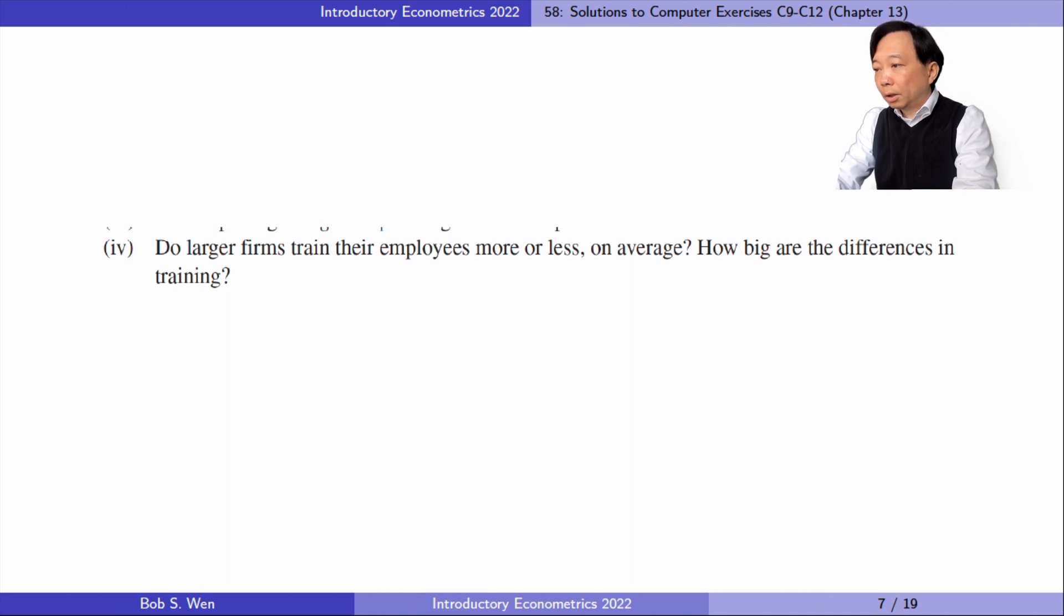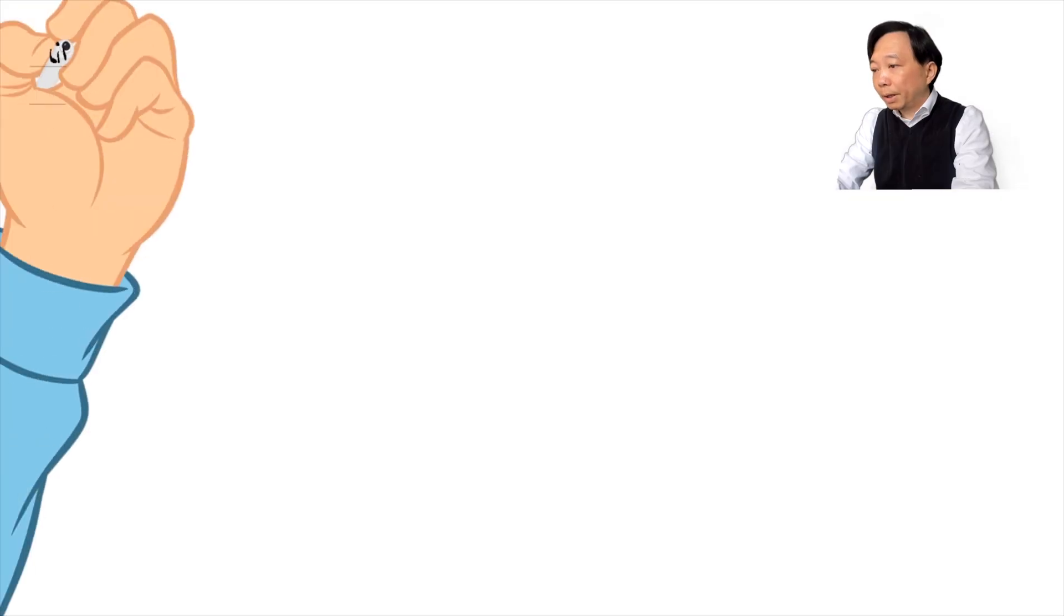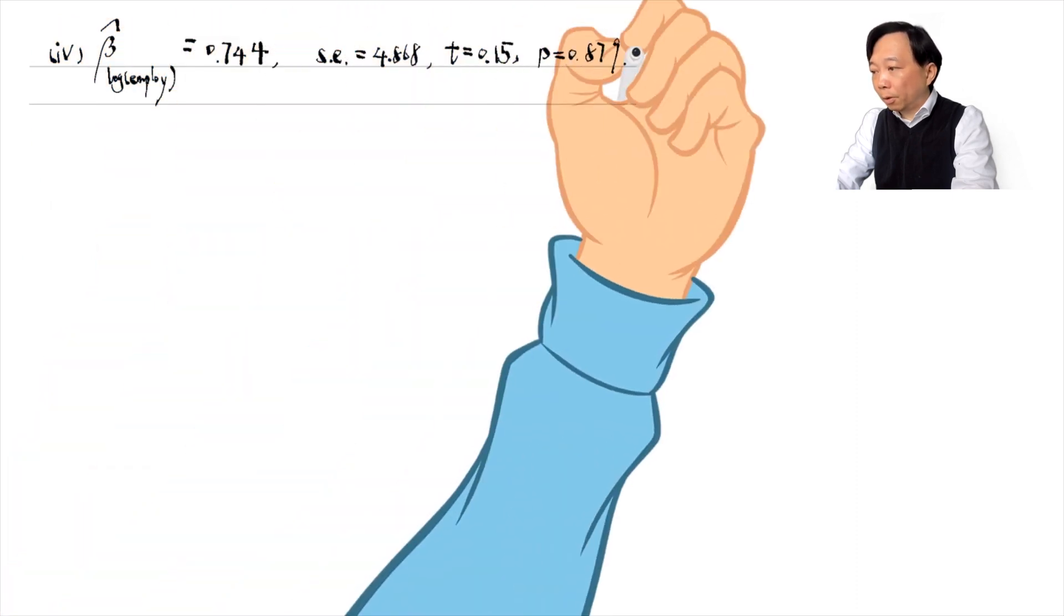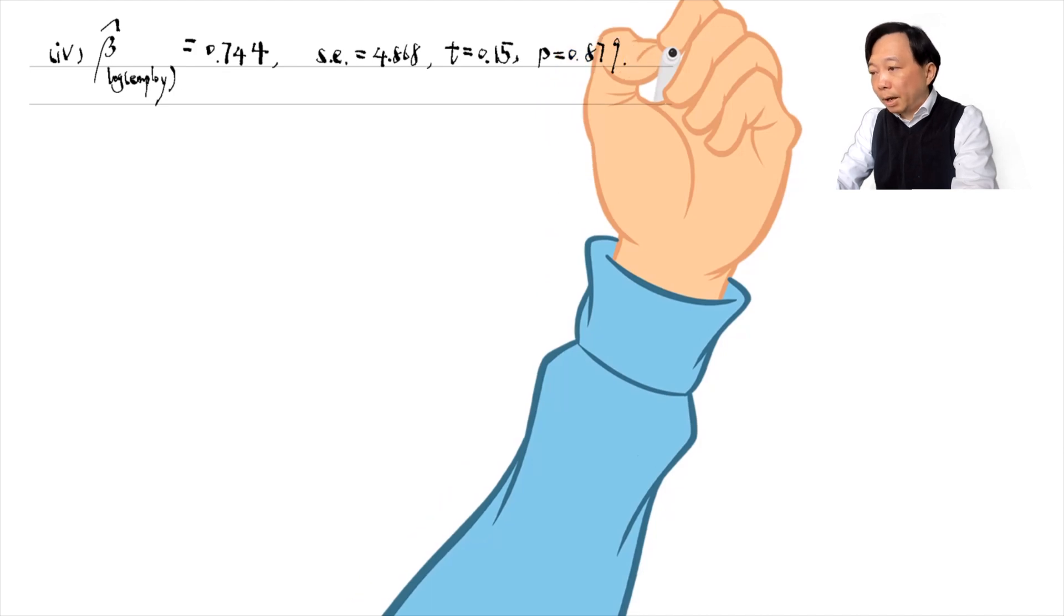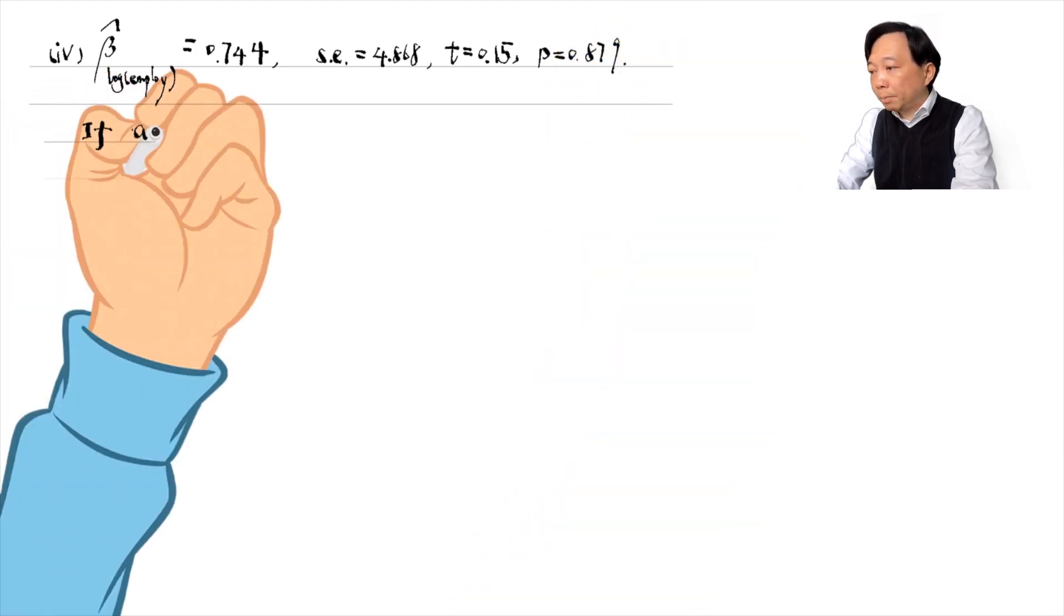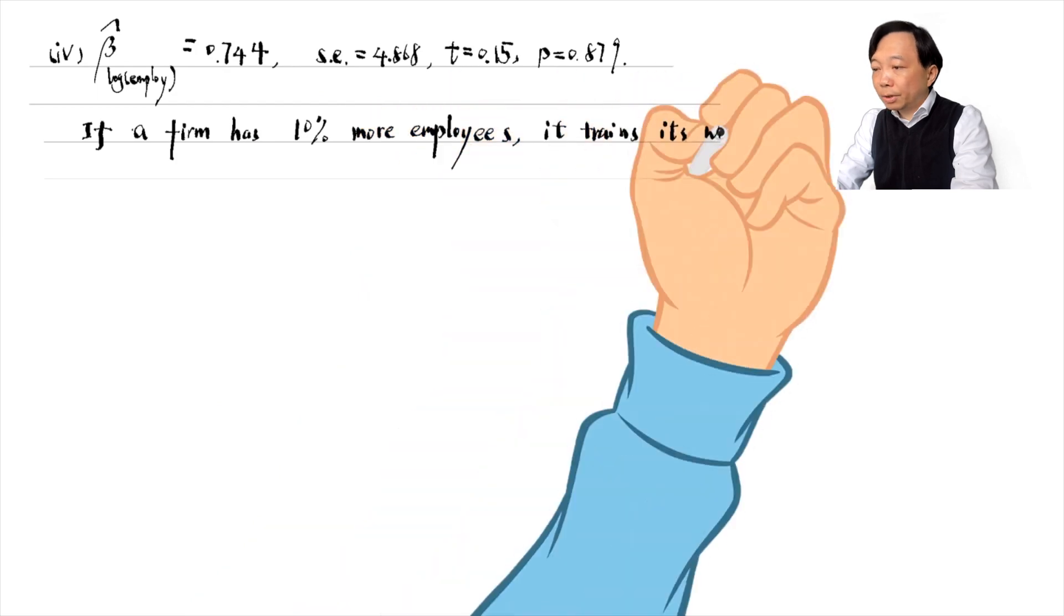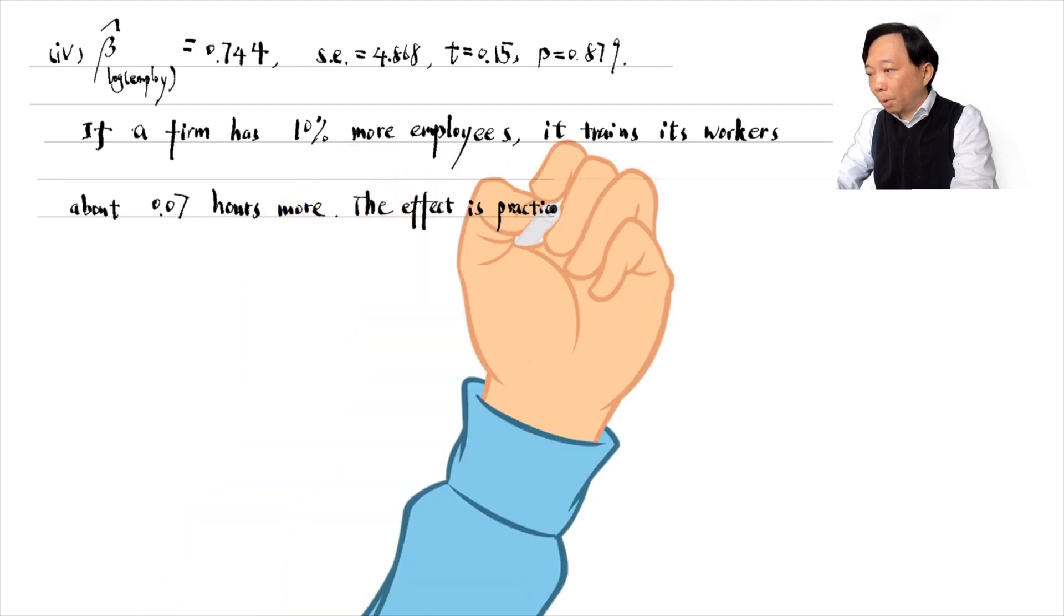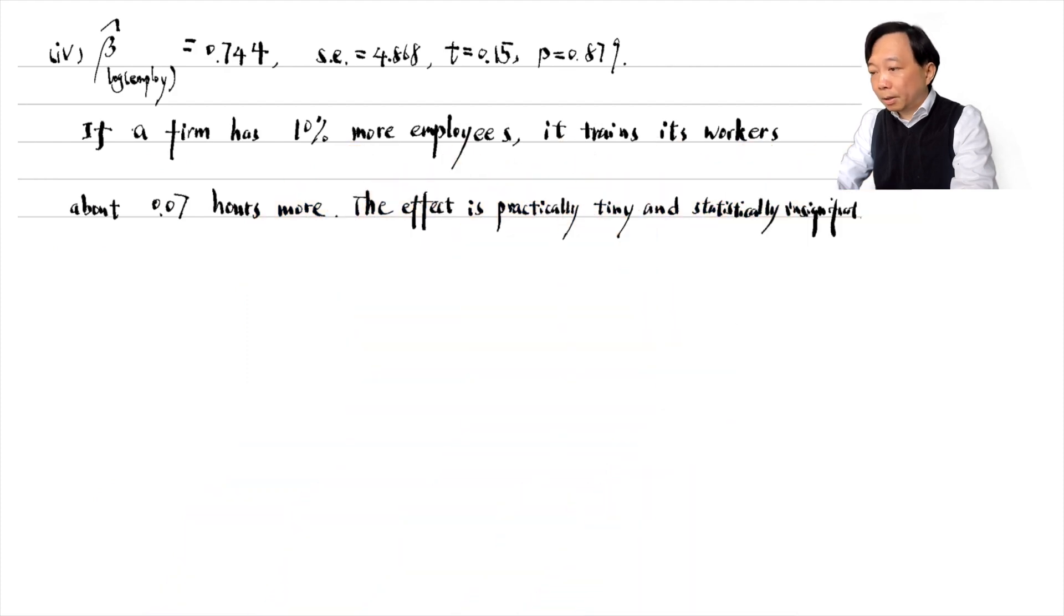In part 4, do larger firms train their employees more or less on average? How big are the differences in training? The estimate for the coefficient on the log employment is 0.744. It implies that if a firm has 10% more employees, it trains its workers about 0.07 hours more. The effect is practically tiny and statistically insignificant.